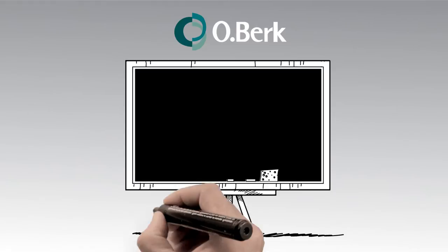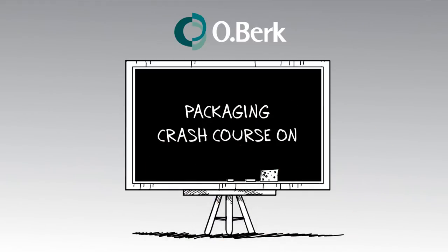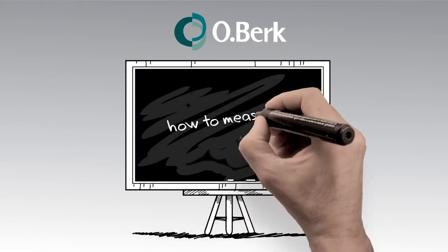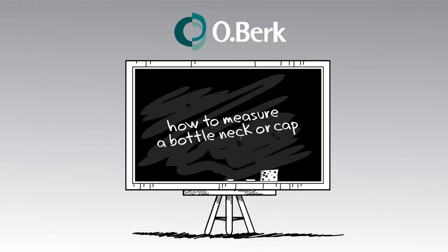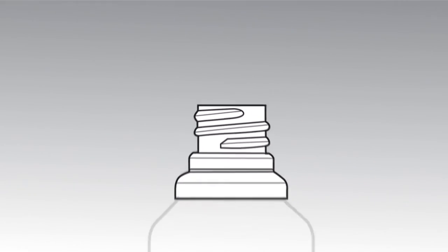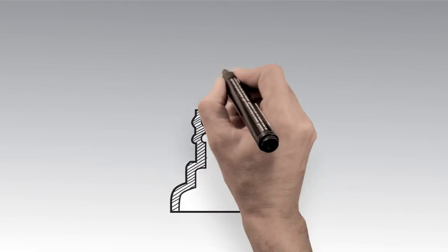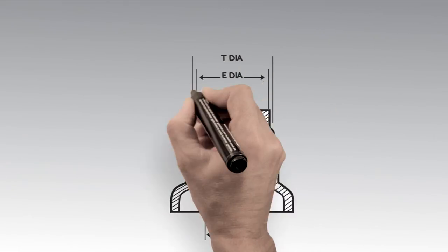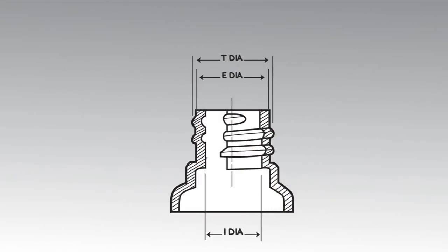The O.Berk company presents a packaging crash course: how to measure a bottleneck or cap. The neck of a bottle has many dimensions which can get confusing. The E, I, and T dimensions are just for the opening.